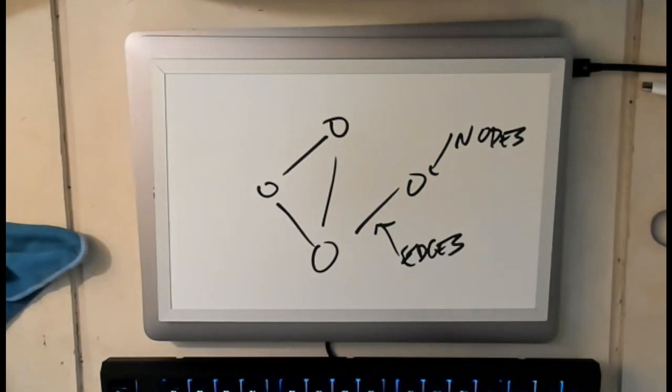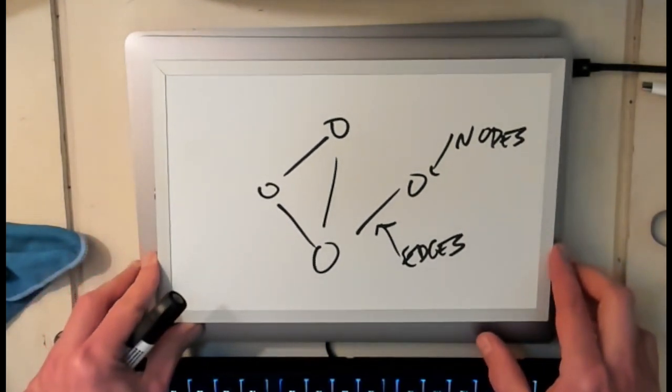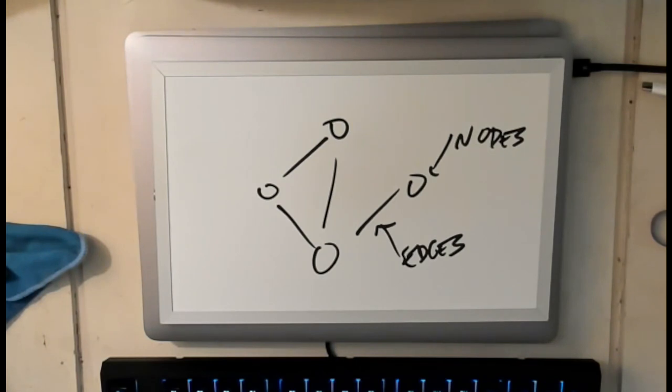This is the simplest form of a graph. It's called an unweighted undirected graph. And what we'll do now is I'll talk about the features of a graph that lead to these other types of graphs which we'll also review in a minute.